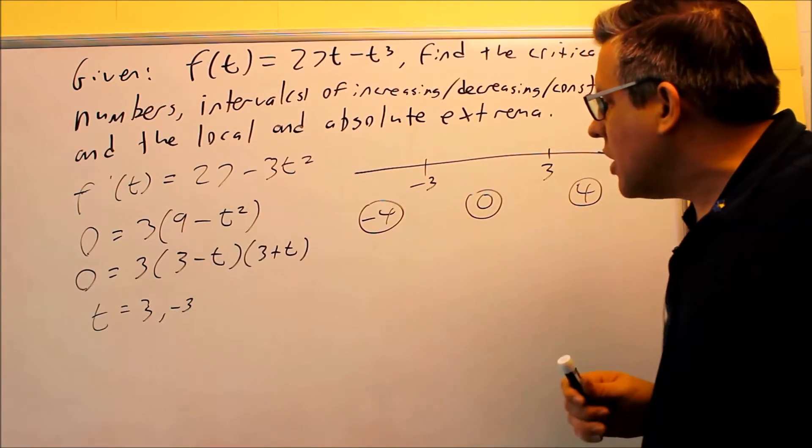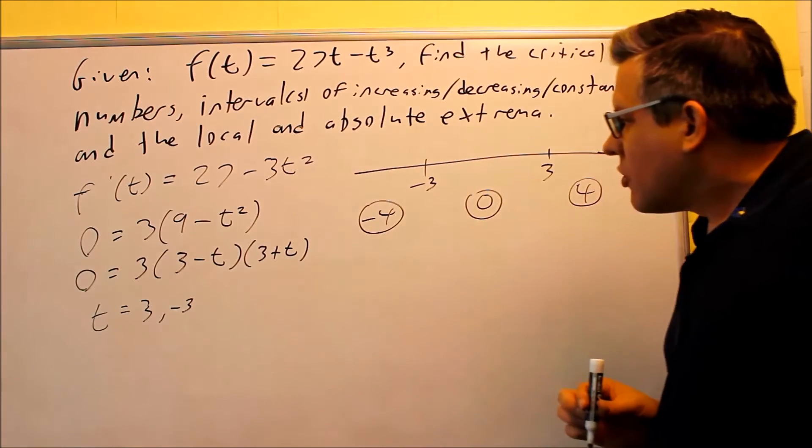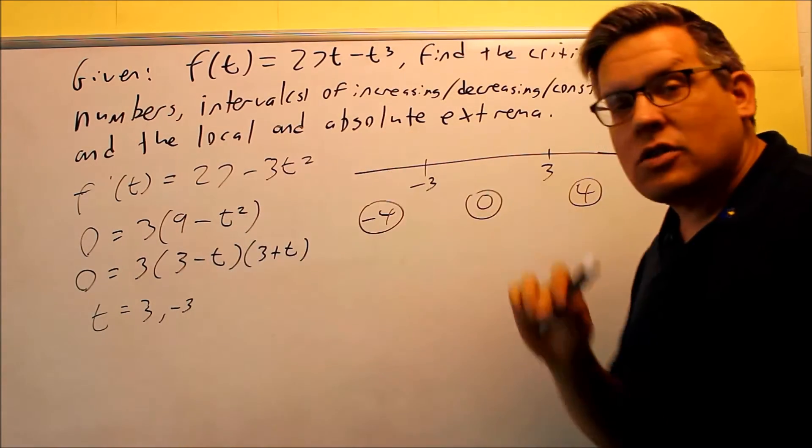Okay, so we're going to put that into each of these. So if I put negative 4 into there, negative 4 squared is 16. I get 27 minus 48. We already can see there we get a negative result.